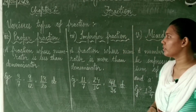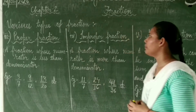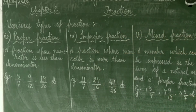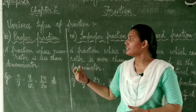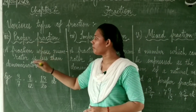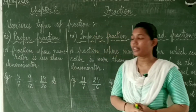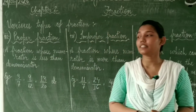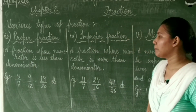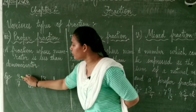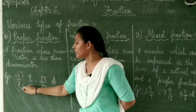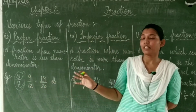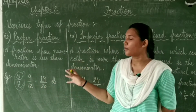Now it is time to discuss the proper fraction, improper fraction, and mixed fraction. In a proper fraction, a fraction whose numerator is less than the denominator — it means the numerator should be less than the denominator. When you see such a fraction, it is a proper fraction.